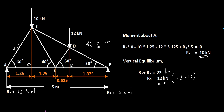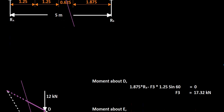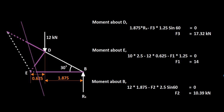Now we move on to find the forces on members 1, 2, and 3. We draw a line through those members — the condition is a maximum of 3 members with unknown forces. We can consider either side of this line as a free body. Inspecting the figure, the right side is simpler because it has only two forces, whereas the left side has two forces and three members with unknown forces. So we use the right side.